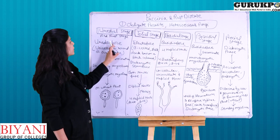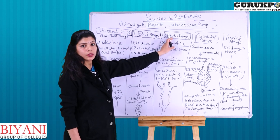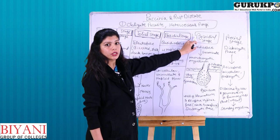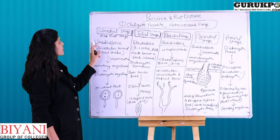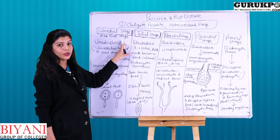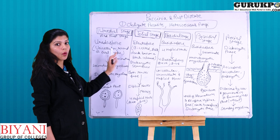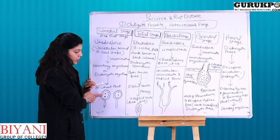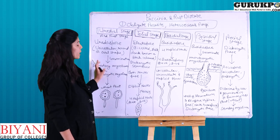The first is the uredial stage, which involves uredospore formation. Three stages of the life cycle are completed on the wheat plant and two stages on the barberry leaf. Uredospores are unicellular, round and oval shaped structures. We can see it is a unicellular structure with two nuclei present — this is a dikaryotic structure.